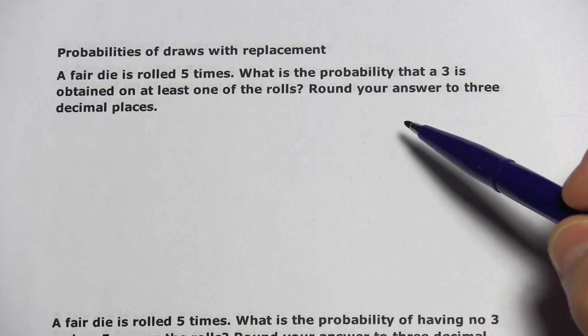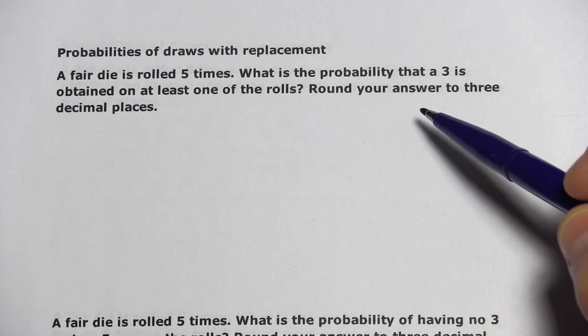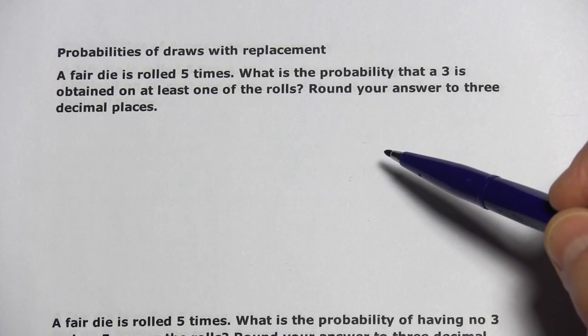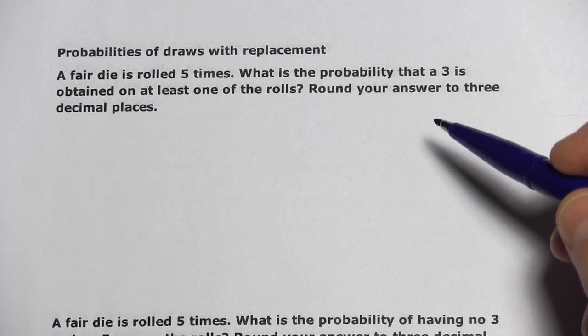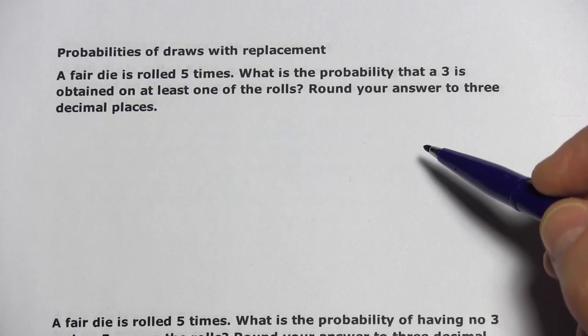At first glance, this looks pretty tricky. You could have a three on one of the rolls, two of the rolls, three, four, or five of the rolls. So how do we actually approach this?